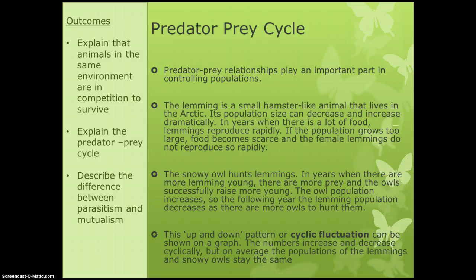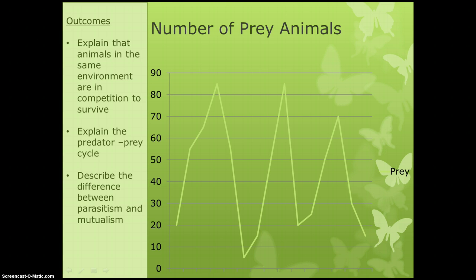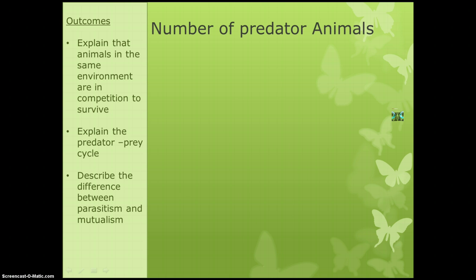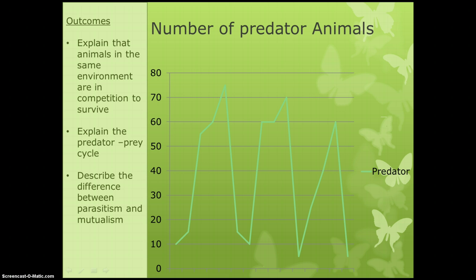On average the numbers stay the same but they do go up and down. Looking at the number of prey animals in an area — the green line is the prey — it goes up over time, then sharply decreases, then gradually goes up, then decreases, in a repeating up-down pattern. The predator numbers do the same thing: going up, then decreasing, up, then decreasing — fluctuating over and over.